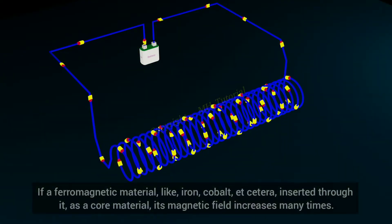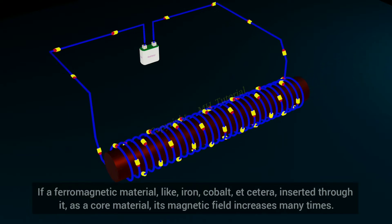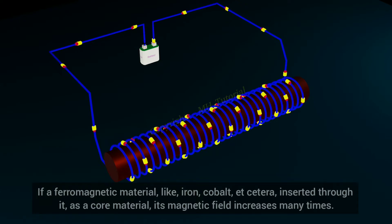If a ferromagnetic material like iron, cobalt, etc., inserted through it as a core material, its magnetic field increases many times.